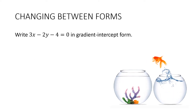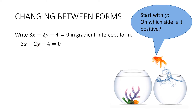And we can change the other way. Write 3x take away 2y take away 4 equals 0 in gradient intercept form. We'll start with our equation, and probably the best thing to do is decide which side to put the y's on — on which side is the y positive? Currently this is negative, so we're going to take this over the other side. So I'm going to get 3x take away 4 equals 2y. Then I'm going to divide everything by 2 and flip it around. So our answer is y is equal to 3x on 2, take away 2.